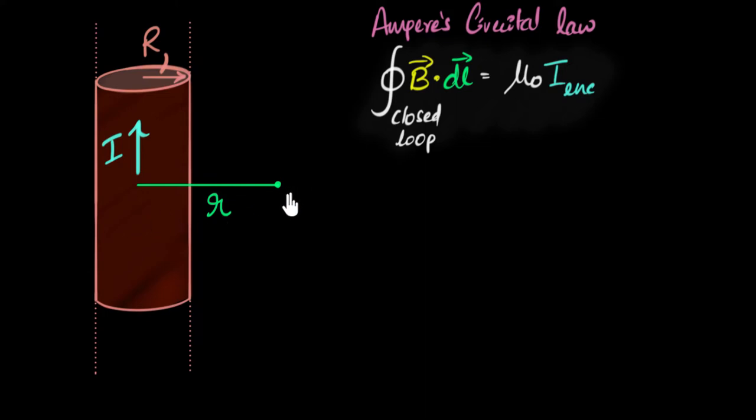So the question is what closed loop should I choose over here? Well before we do that let's look at how the magnetic field looks like, then I can think about what loop should I choose. So what would the magnetic field look like over here?